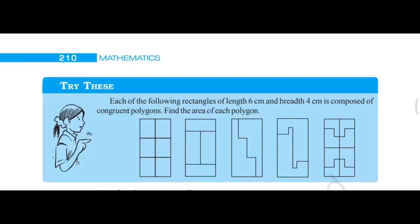Today we are doing 'Try These' page number 210, Chapter 11: Perimeter and Area, Class 7 Math NCERT. Each of the following rectangles of length 6 cm and breadth 4 cm is composed of congruent polygons. We need to find the area of each polygon. The parts are congruent, meaning they have exactly the same area. We will find the area of the rectangle first, then count the number of parts, divide, and find the area of each polygon.